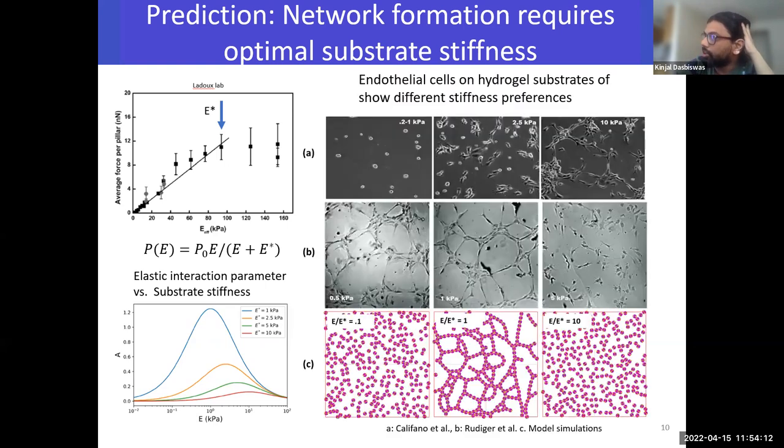What does this tell us about experiments? Remember, we started by showing you two different experiments by two different groups, and they saw opposite dependencies on substrate stiffness. But now our results can reconcile this, because what we are saying is that there is some optimal stiffness at which the interactions are maximum, which will let the cells form networks. Whereas if the stiffness is too low or too high, the interactions are too small, and the noise dominates, and the cells are not able to form these networks. That's the first takeaway.